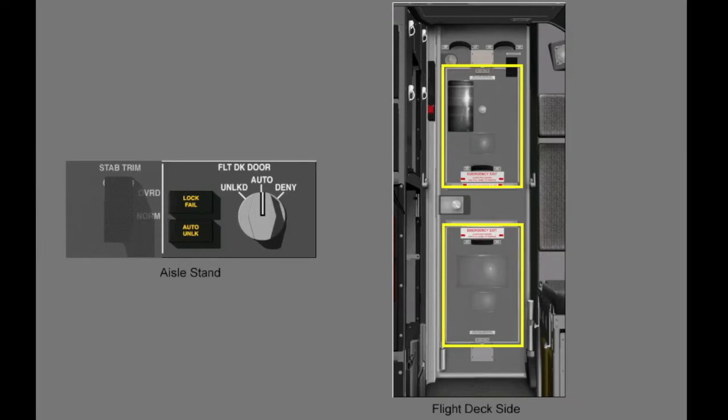If there is a fast forward decompression, the panels open into the flight compartment. This equalizes the pressure between the flight deck and the passenger compartment.